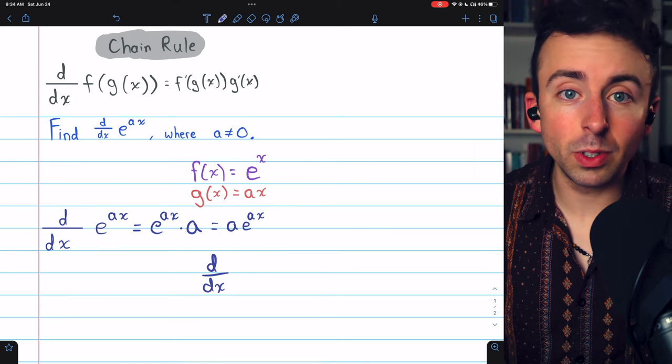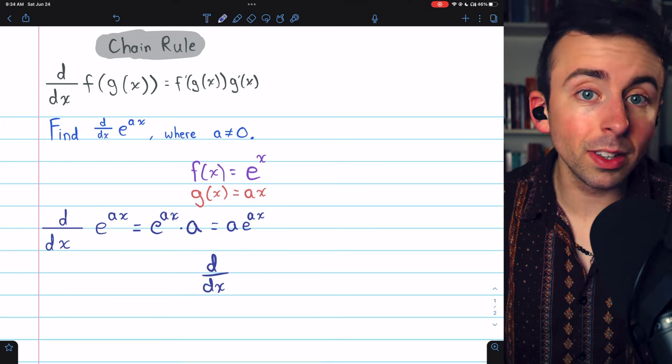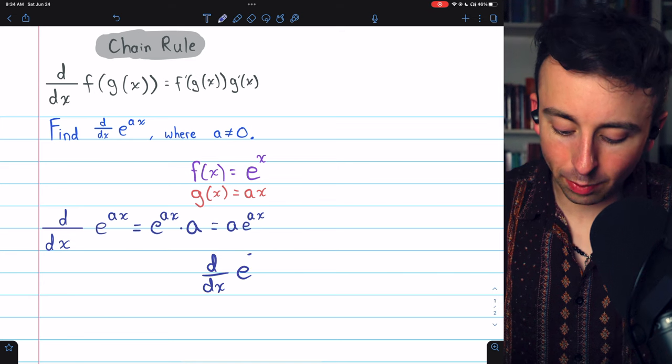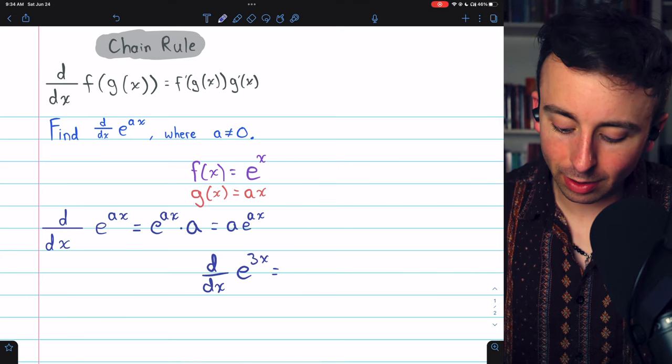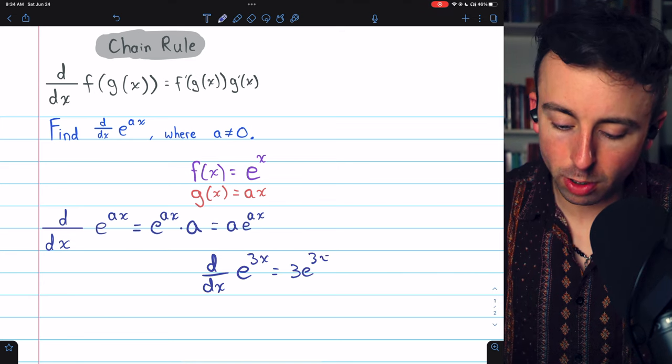This derivative is really simple. You definitely don't have to memorize it, but you can see the formula works. The derivative of e to the 3x, for example, is just 3e to the 3x.